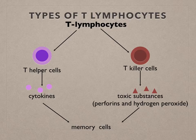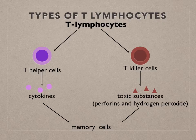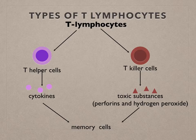T helper cells play a key role in immunity. When attached to an antigen-presenting cell, T helper cells secrete chemicals called cytokines. T killer cells, also known as T cytotoxic cells, kill body cells infected by non-self material. They make holes in the cell surface membrane of the infected body cell and release toxic substances into it. Because viruses need host cells to reproduce, the body cell is sacrificed and this prevents the virus from multiplying.